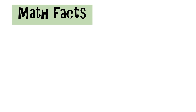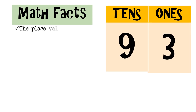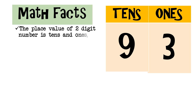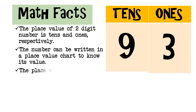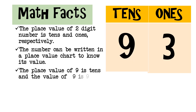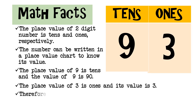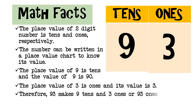Always remember that the place value of a two-digit number is tens and ones respectively. The number can be written in a place value chart to know its value. The place value of nine is tens and the value of nine is ninety. The place value of three is ones and its value is three. Therefore, ninety-three makes nine tens and three ones, or ninety-three ones.